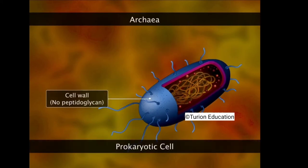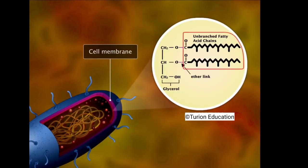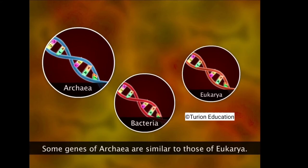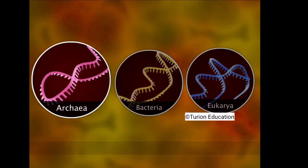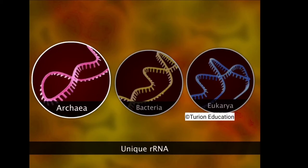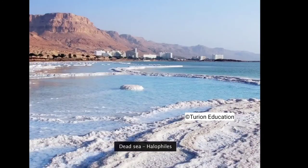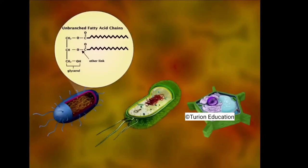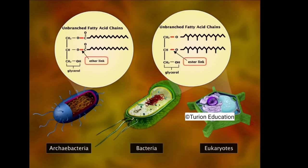Archaea are prokaryotic cells with cell walls completely lacking peptidoglycan. The archaea cell membrane contains unbranched fatty acid chains attached to glycerol by ether linkages. Some genes of archaea are similar to those of eukarya but not to those of bacteria. Archaea contain unique rRNA sequences distinctly different from those of bacteria and eukarya. Domain Archaea includes thermophiles, acidophiles, halophiles, and methanogens. The ether linkage in archaea membranes is more stable than the ester linkage in bacteria and eukarya, enabling them to withstand extreme heat, acid, and saline conditions.